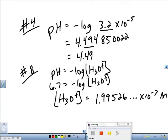Second log negative 6.7. Second log negative 6.7. Now, pH and pOH.